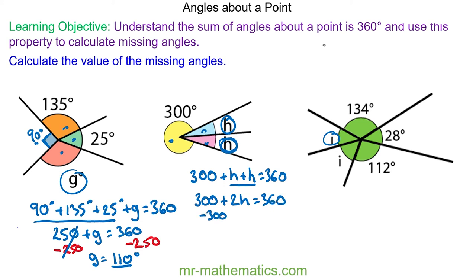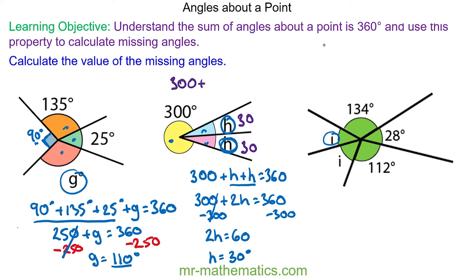We can take away 300 from both sides, so 2h will equal 360 take away 300, which is 60. So 1h will be equal to 30. We can check that this works: we have 30 degrees here, 30 degrees here, and in total 300 plus 30 plus 30 does make 360.